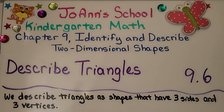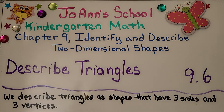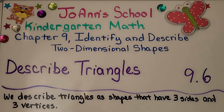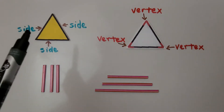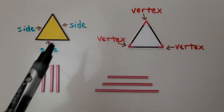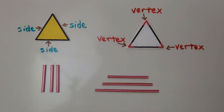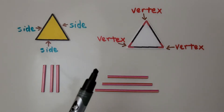Lesson 9.6, Describe Triangles. We describe triangles as shapes that have three sides and three vertices. Each triangle has three straight sides and three vertices.